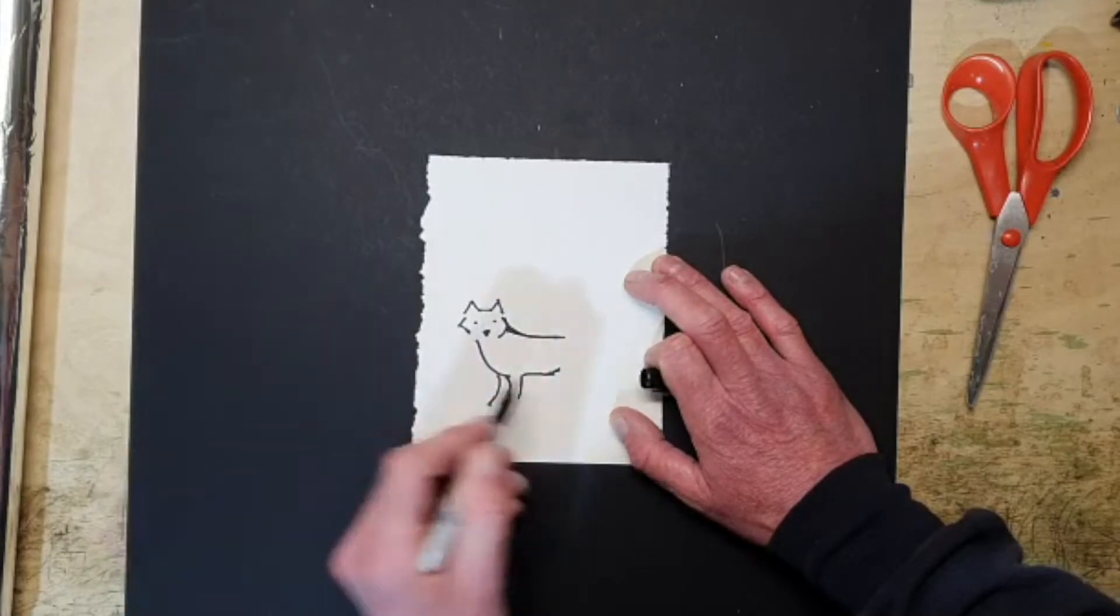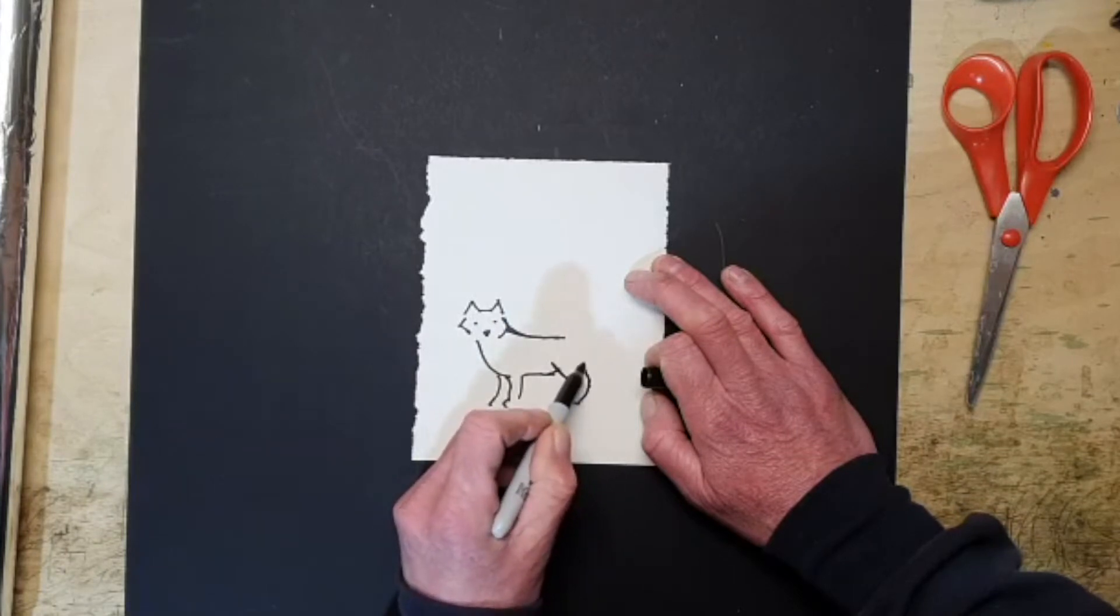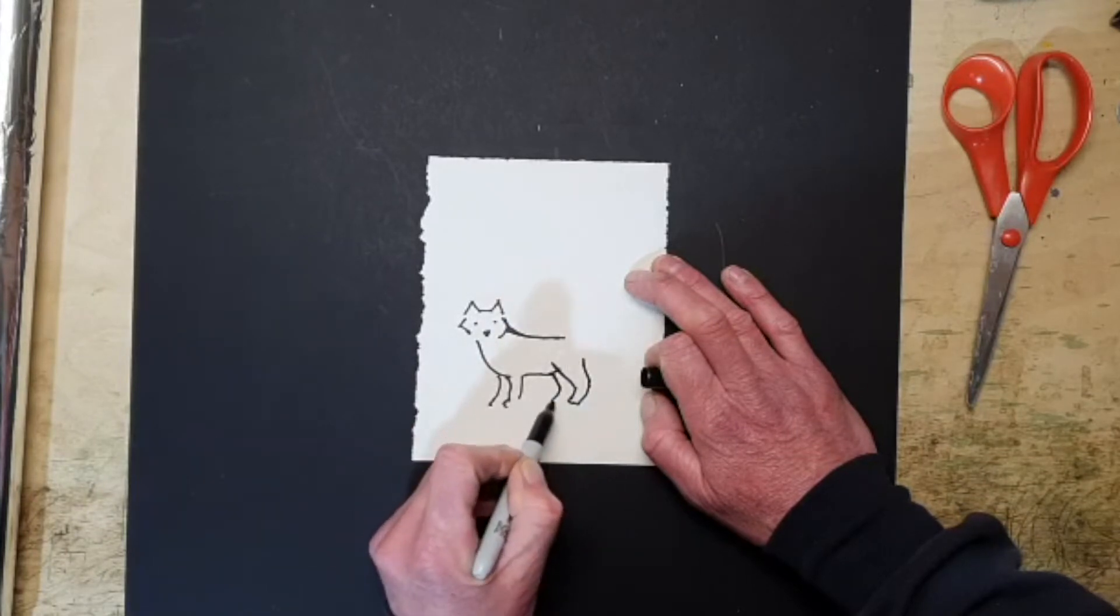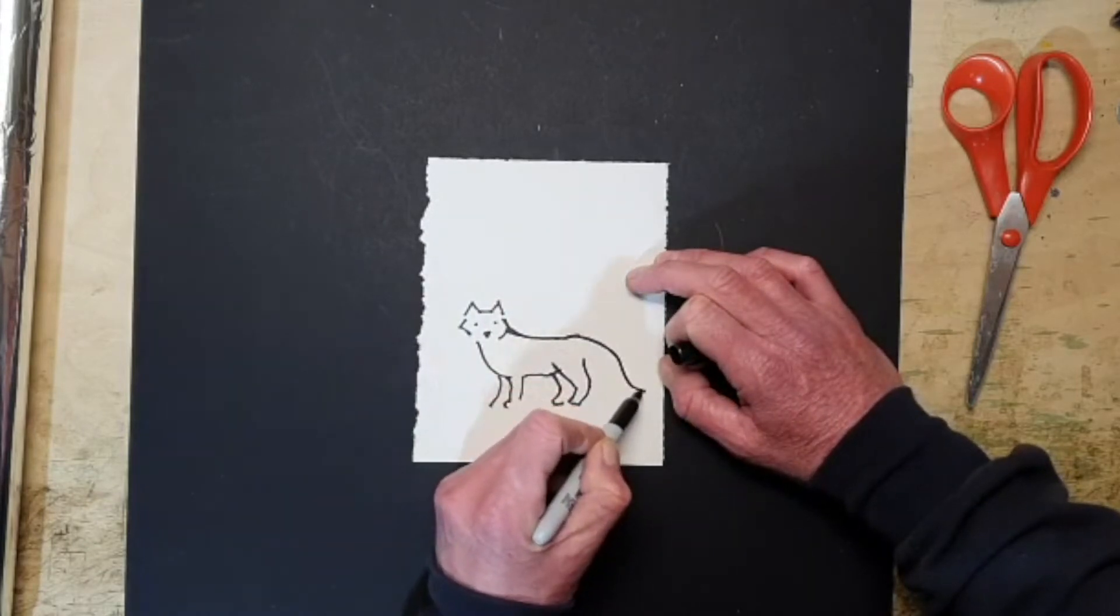Like that. Legs are similar to the cat. And then obviously they have a big tail and a brush like that.